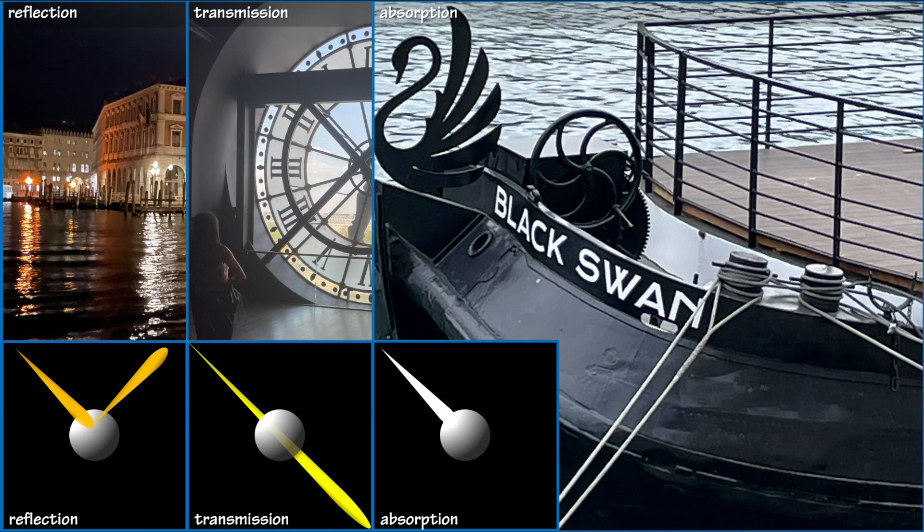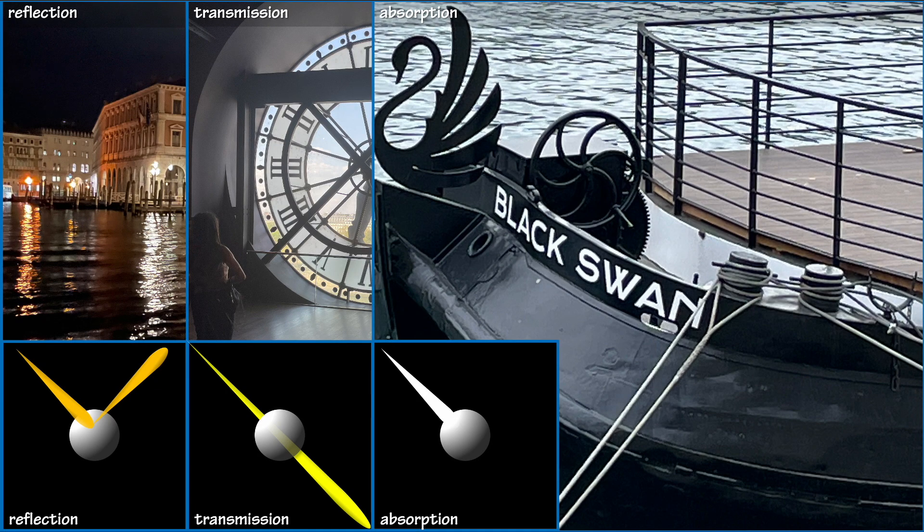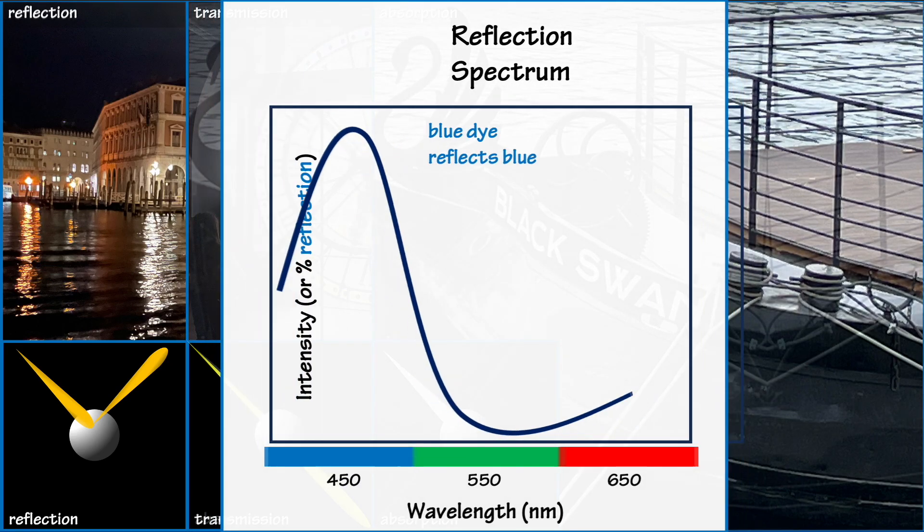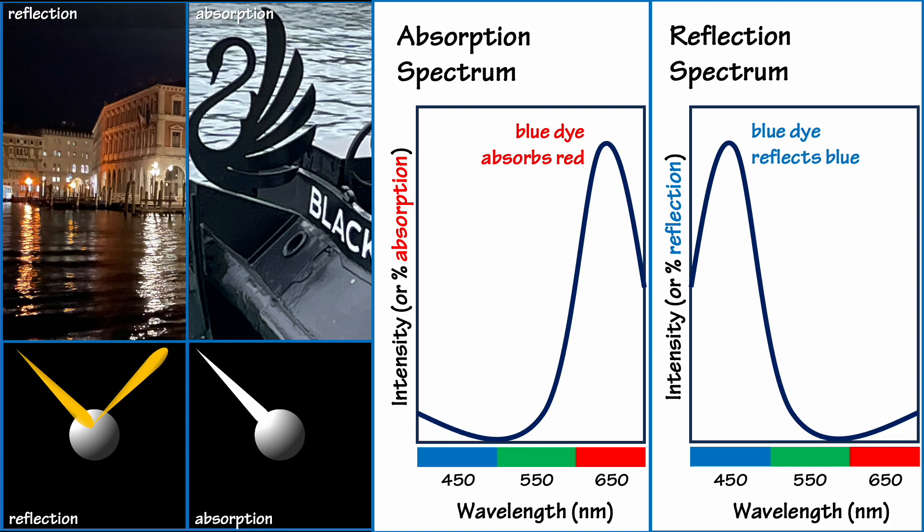Here we'll think about reflection, absorption, and transmission. In the experiments we'll do, we'll need to graph the data that we collect, and there are two common types of graphs that we could use. We just looked at one of these, a reflection spectrum, where wavelength is on the x-axis and the intensity of reflected light is on the y-axis. Blue paint and blue dye reflect blue light, and the reflection spectrum shows an energy peak at blue wavelengths. We could also make a graph showing where energy is absorbed. This would be almost the opposite of the reflection spectrum. Blue dye absorbs red light, so on an absorption spectrum, we see an energy peak at red wavelengths.